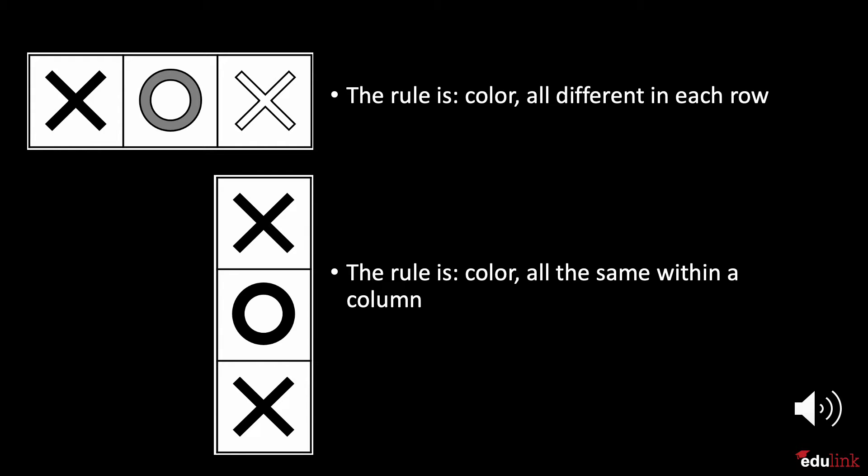However, if we follow the column down rather than across, the color stays the same. This means the color does not change vertically. The rule is color, all the same within a column.